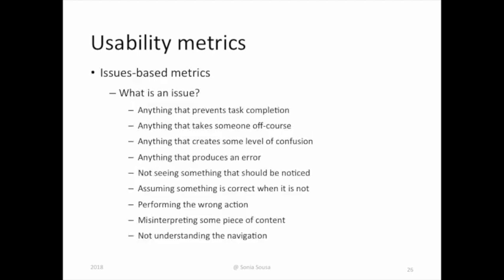Another way to test our product is to look for issues, which we call issue-based metrics. We look for anything that prevents the task from being completed, anything that takes someone off course, anything that creates confusion, anything that produces an error — not seeing something that should be noticed, assuming something is correct when it is not, performing the wrong action, misinterpreting some pieces of content, or not understanding the navigation. This is done mainly by providing the user a set of tasks and observing if they follow what is expected or not.